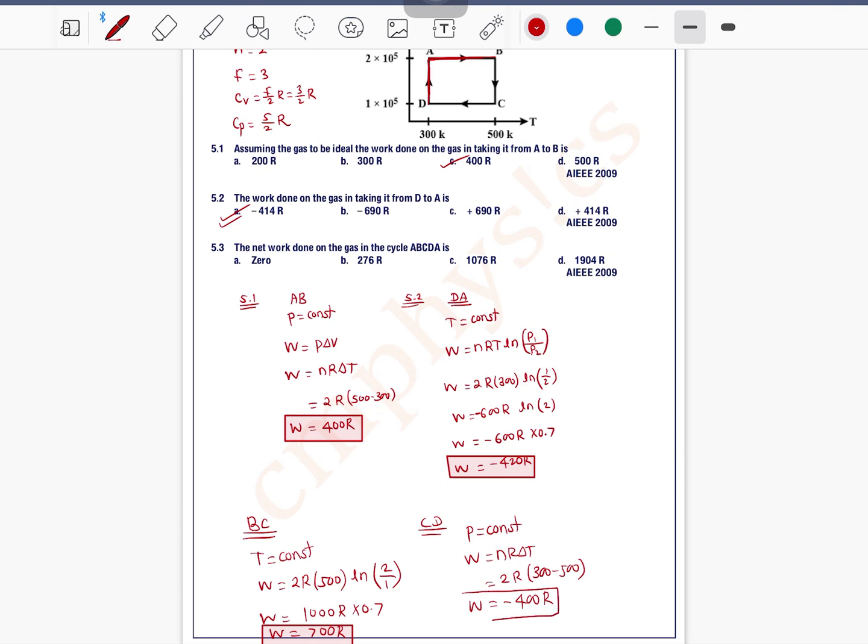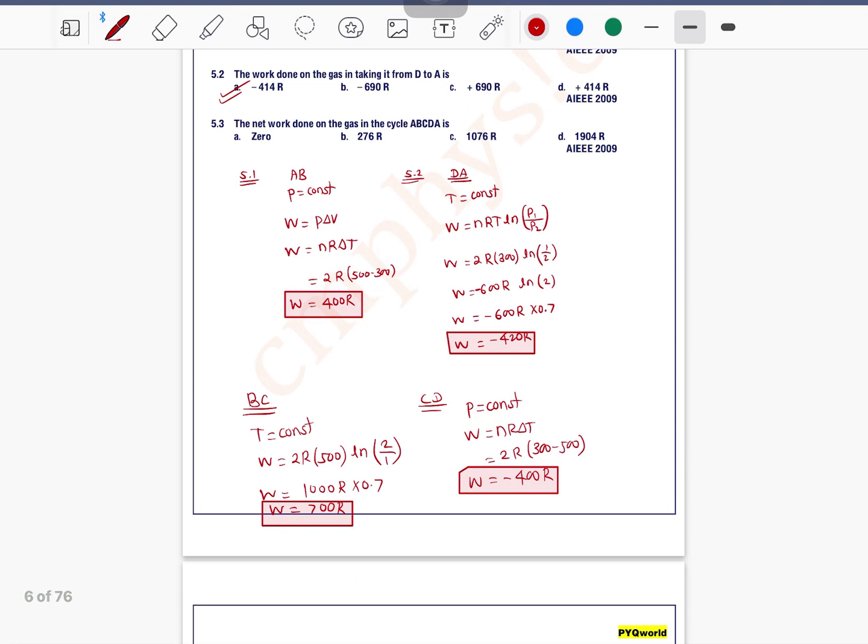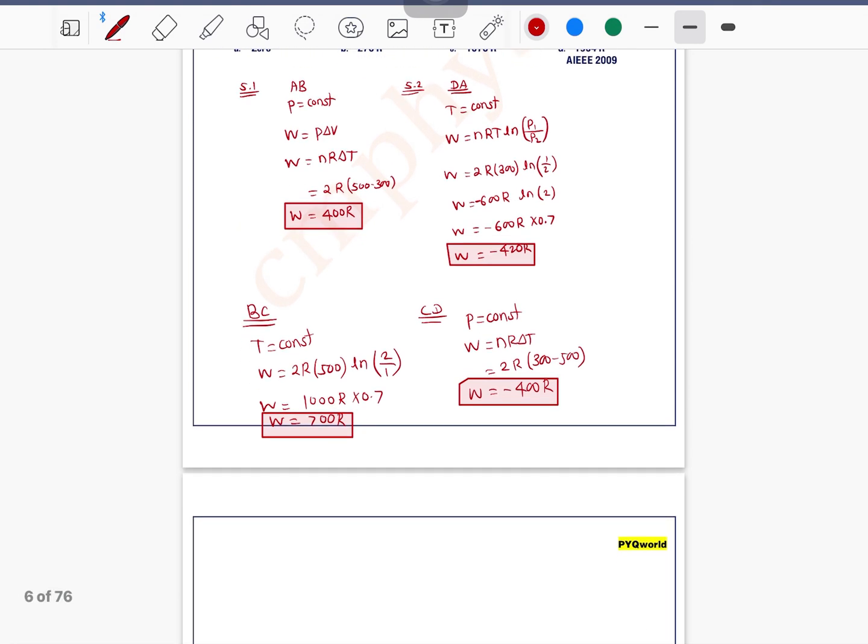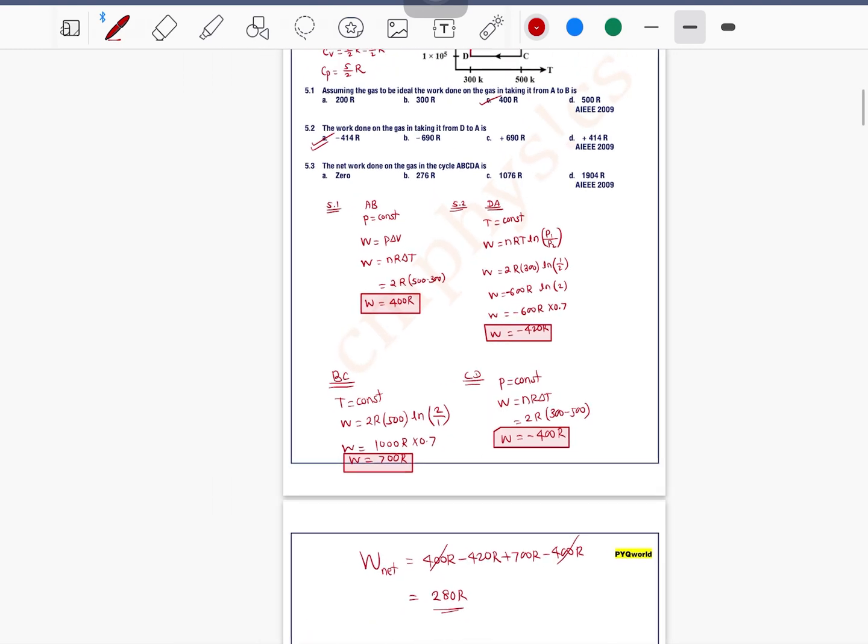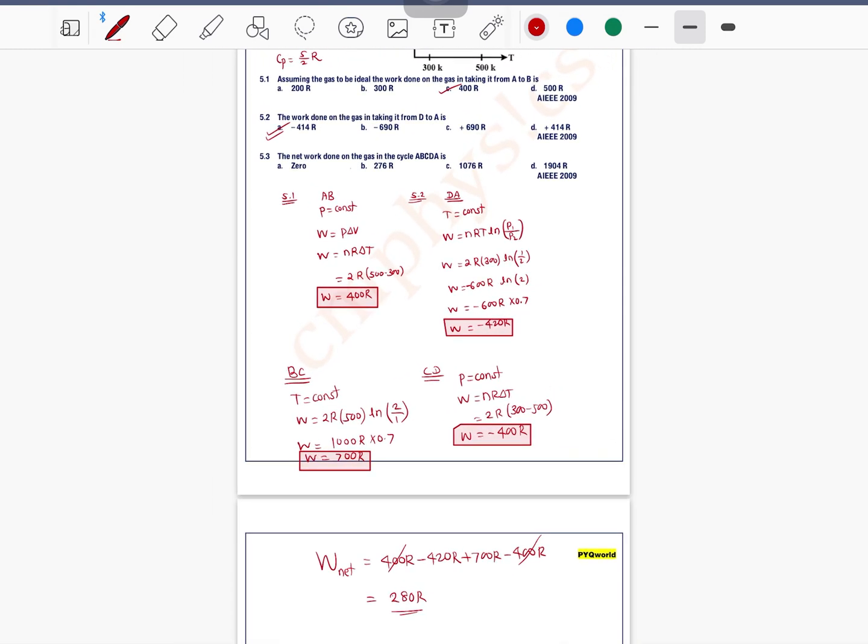So if we add all the works, the net work in the complete cycle is 400R - 420R + 700R - 400R. This 400 and this 400 cancel out. 700 minus 420R is 280R, approximately 280R. So approximately 280R means option B is the correct one.